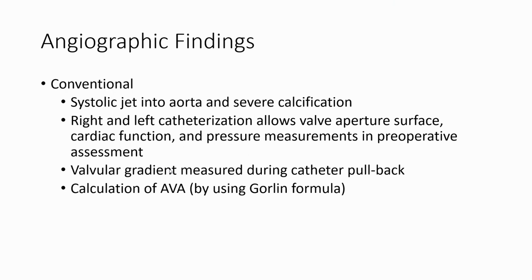Angiographic findings: conventional angiography shows a systolic jet into the aorta and severe calcification. Right and left heart catheterization allows simultaneous cardiac output and pressure measurement. Pre-operative assessment includes valvular gradient measurement during catheter pullback and calculation of the aortic valve area.